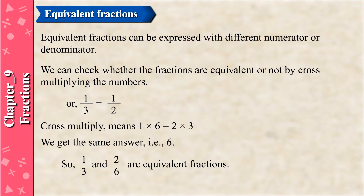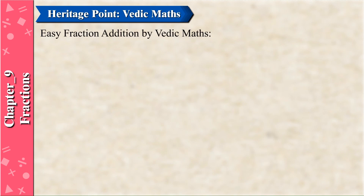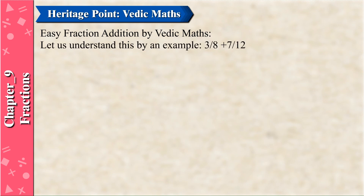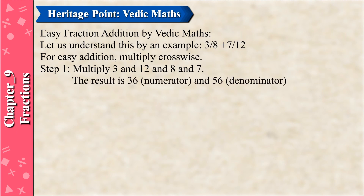Equivalent fractions can be expressed with different numerators or denominators. We can check whether fractions are equivalent by cross-multiplying. For example, 1/3 = 2/6. Cross-multiply: 1 × 6 = 2 × 3 = 6. We get the same answer, so 1/3 and 2/6 are equivalent fractions. Vedic Maths: Easy Fraction Addition using Vedic Maths. Example: 3/8 + 7/12. For easy addition, multiply cross-wise. Step 1: Multiply 3 and 12, and 8 and 7, giving numerator 36 and denominator 56.